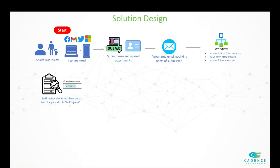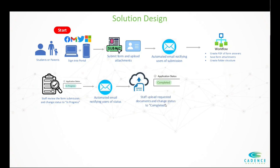We have a special column called application status. Once they start reviewing that form submission, they can change the status to 'in progress,' and that will send a little automated email to the user saying, 'Hey, your form submission is now being reviewed. Expect your documents within X amount of days.' Now, let's say staff have finished their review, they've looked at the identity documents uploaded, everything checks out. So they're going to upload the requested documents to SharePoint, and now they're going to change the application status of this form submission to 'completed.' This will kick off our second major workflow.